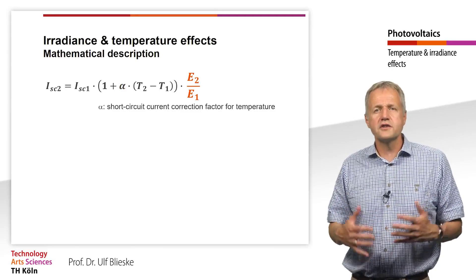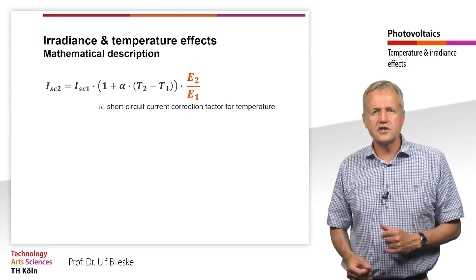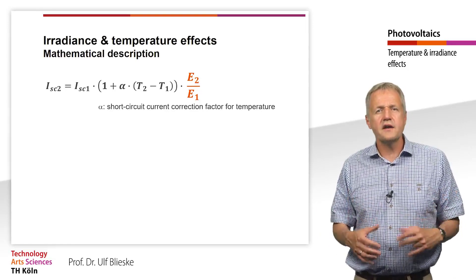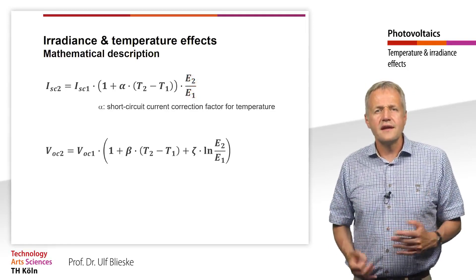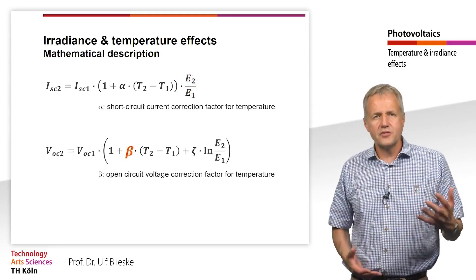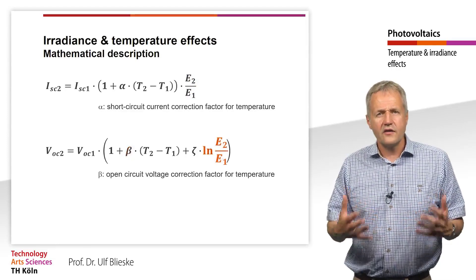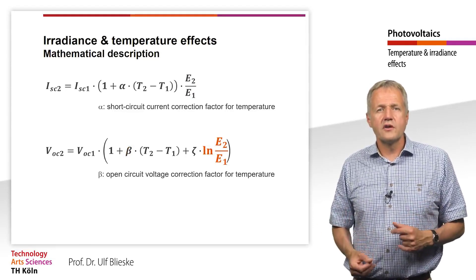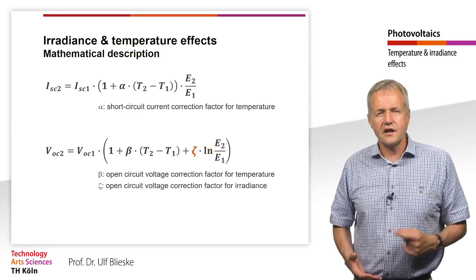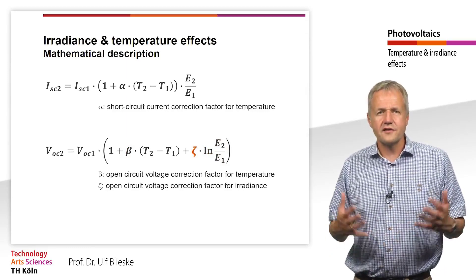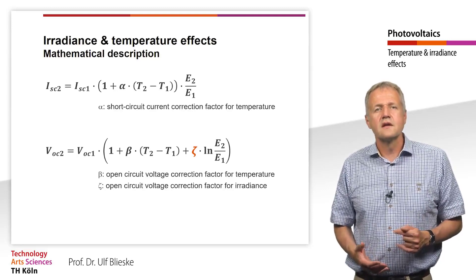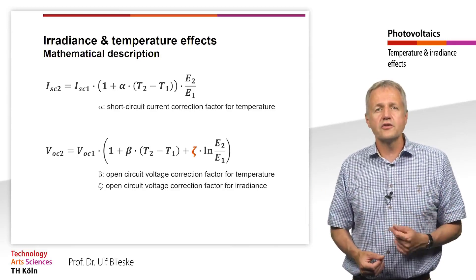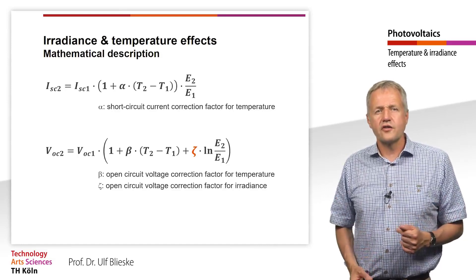Similarly, the open-circuit voltage can be calculated for any conditions if VOC1 is known at temperature T1 and irradiance E1. Here the dependence on temperature is described by the temperature coefficient beta. For irradiance, we found a logarithmic influence, additionally modulated by the dimensionless correction factor zeta. Zeta is about 0.06, or 6%, for crystalline silicon solar cells. These equations will play a significant role later when designing an inverter, as we need to consider the system's performance at different outdoor temperatures.